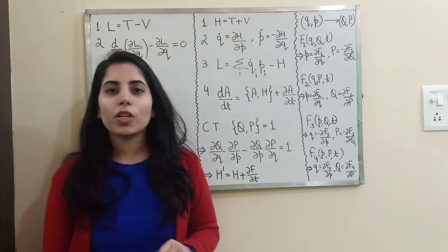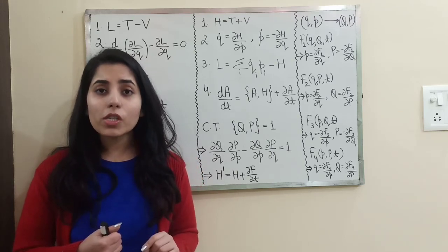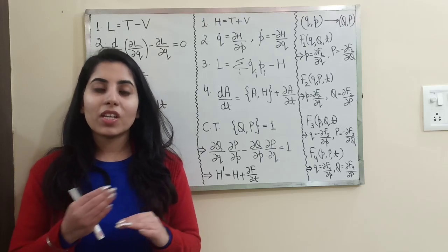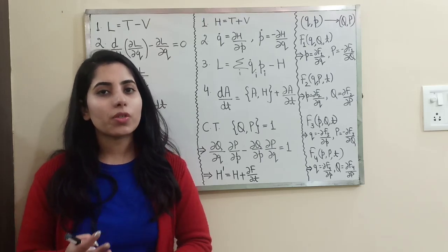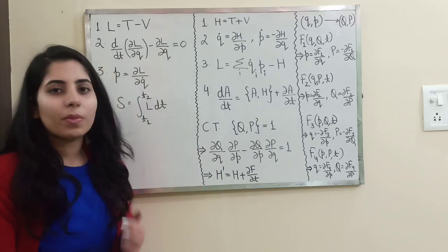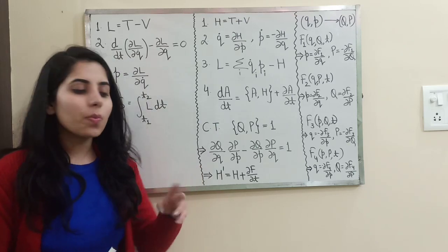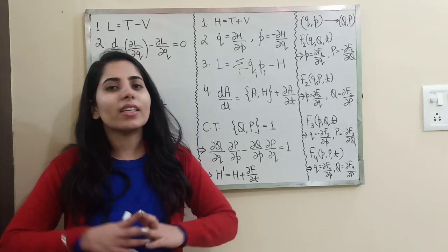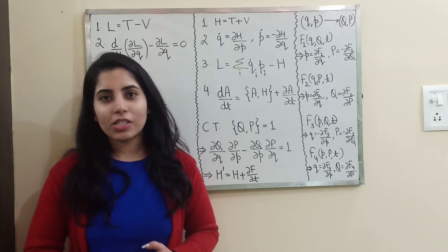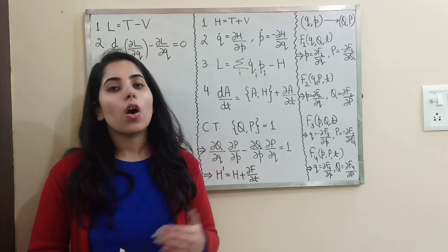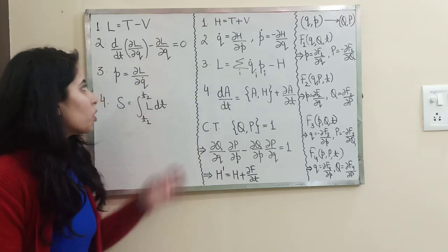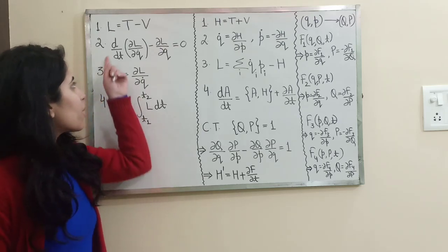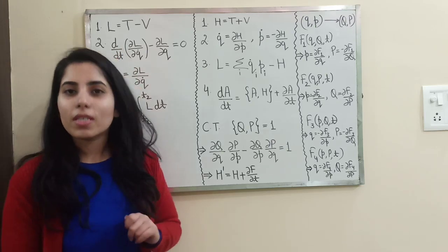So there is just a little difference, but importantly Lagrangian is a function of generalized coordinate and velocity, while Hamiltonian is a function of generalized coordinate and momentum — both generalized. Now the next formula is Lagrange's equation of motion: d/dt (∂L/∂q̇) minus ∂L/∂q equals zero.